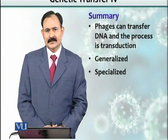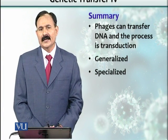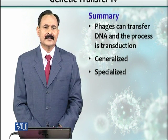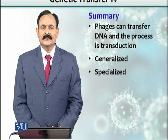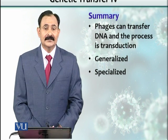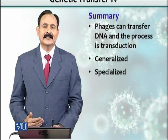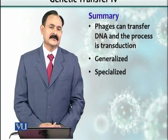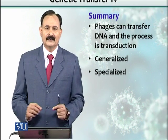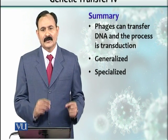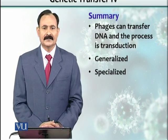In summary, phages can be used for transferring genes from one microorganism to another through two processes. The first is generalized transduction, where any gene could be transferred. The second is specialized transduction, where the viral genome must first integrate into the organism, and when it cleaves off, it brings part of the bacterial chromosome with it. Because it targets only adjacent genes associated with the viral genome, it is called specialized transduction.